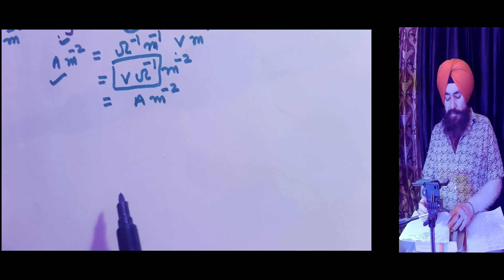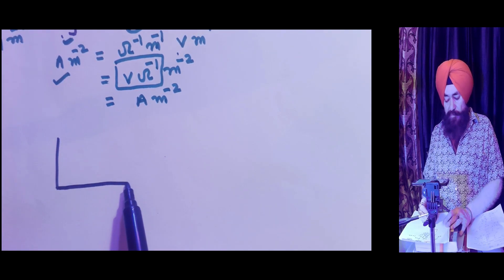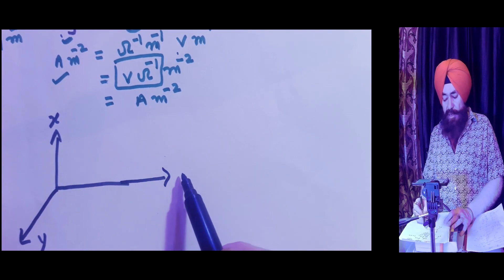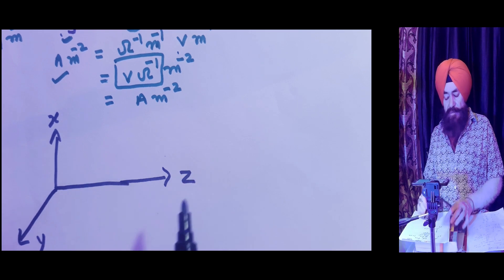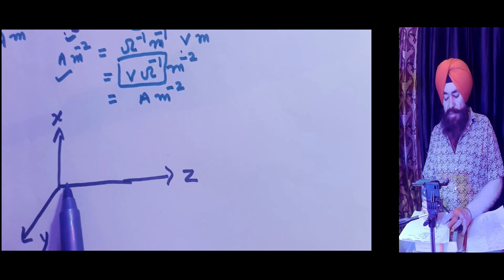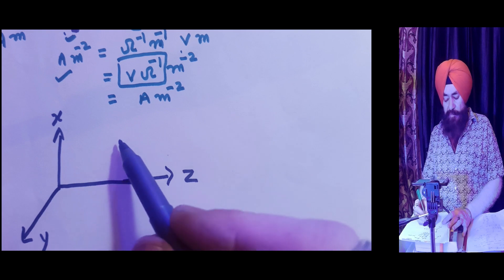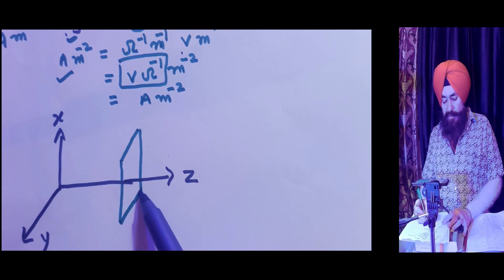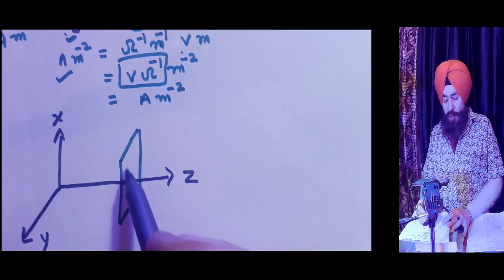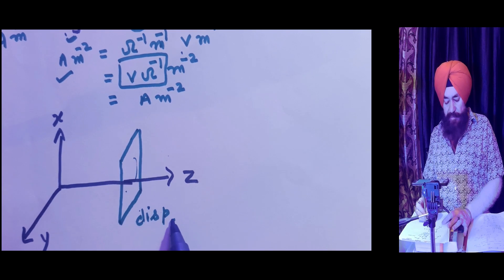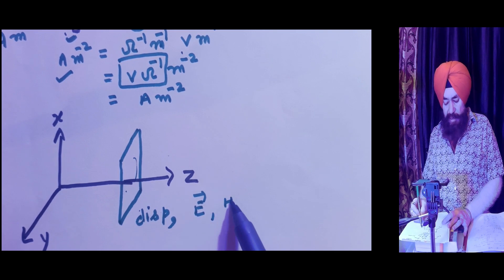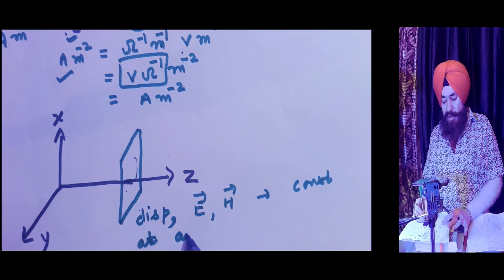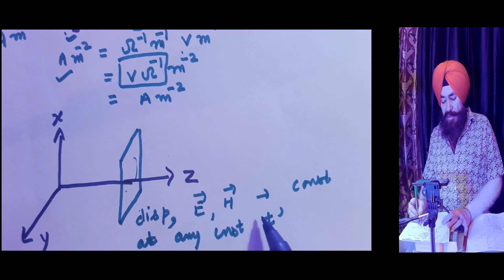Now we are considering a plane wave. Using a coordinate system with X, Y, and Z axes, our wave is propagating along the Z direction. At any instant T, over the wavefront, the displacement, electric field, and magnetic field will all be constant.